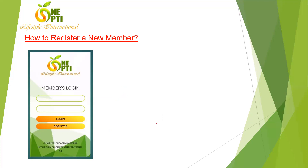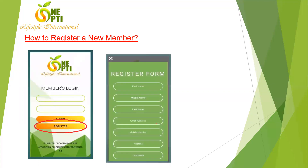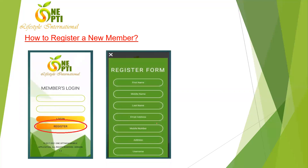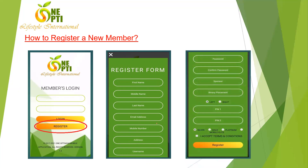To register your new member, once you get the code from the office or mobile stockist, open your mobile app, gather your new member's information, and click on Register. The registration form will pop up — it's really basic. Just fill in the information as required.